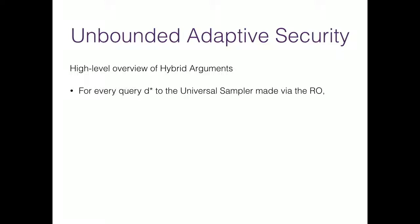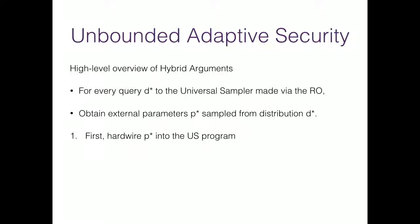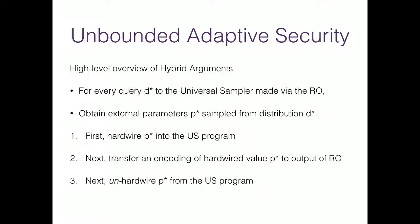Here is a high-level overview of our hybrid experiments. For every query D* that the adversary makes to the universal sampler, we obtain external parameters sampled from D*. In the first sequence of hybrids, we hardwire these external samples into the universal sampler program. In the next sequence of hybrids, we develop a way to transfer an encoding of the hardwired value from the obfuscated program into the output of the random oracle. Then we unhardwire the samples from the program to keep its size small.